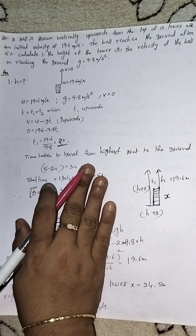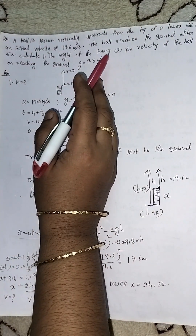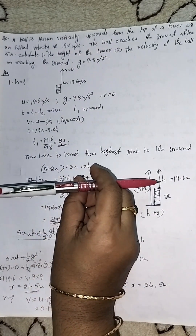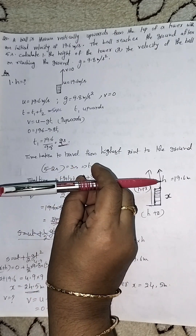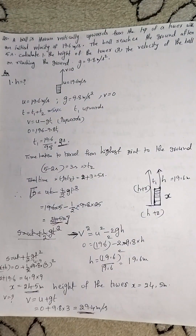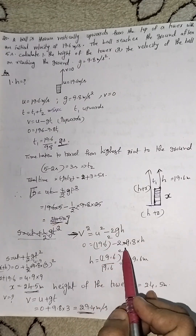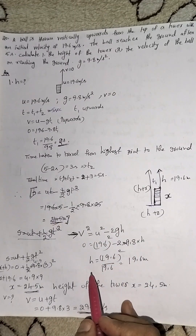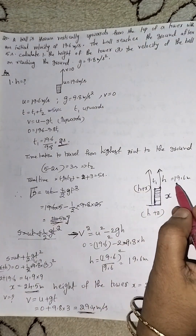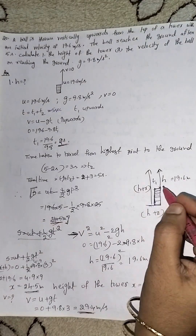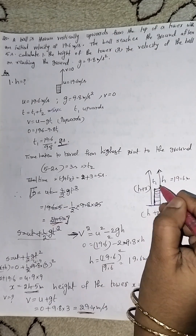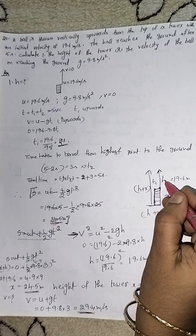Now we find the H value using V² = U² − 2gH. With U = 19.6 and g = 9.8, we get H equal to 19.6 meters. So H equals 19.6 meters, found using the upward direction with T1.